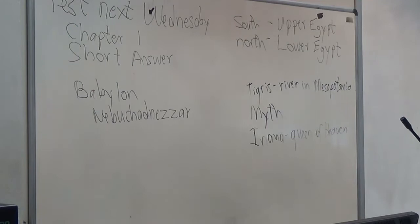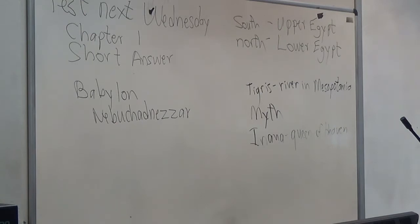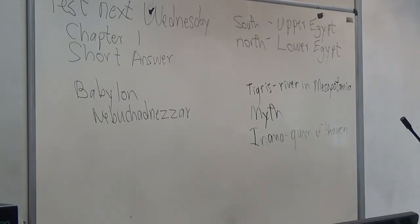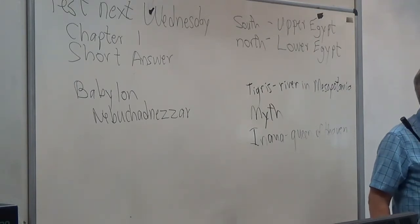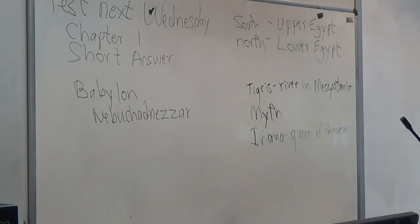Have any of you heard that during the Cretaceous period, the Earth had a uniform tropical climate, including Antarctica and the polar regions? You can look it up — Cretaceous period. The Earth had a uniform tropical climate, and you find tropical plants, animals, and fossils in Antarctica.